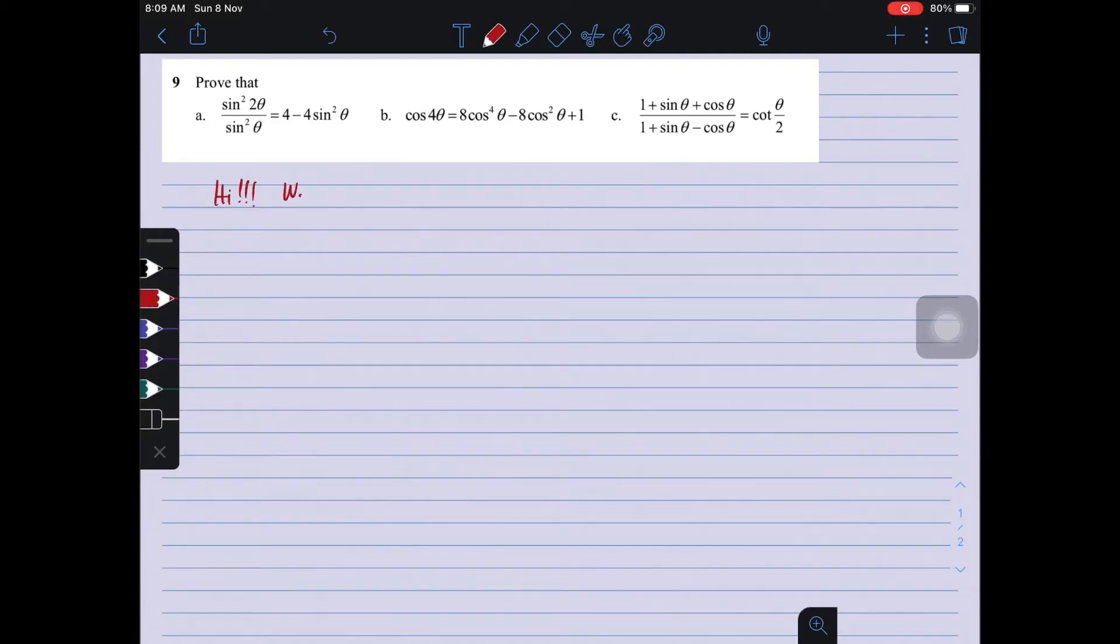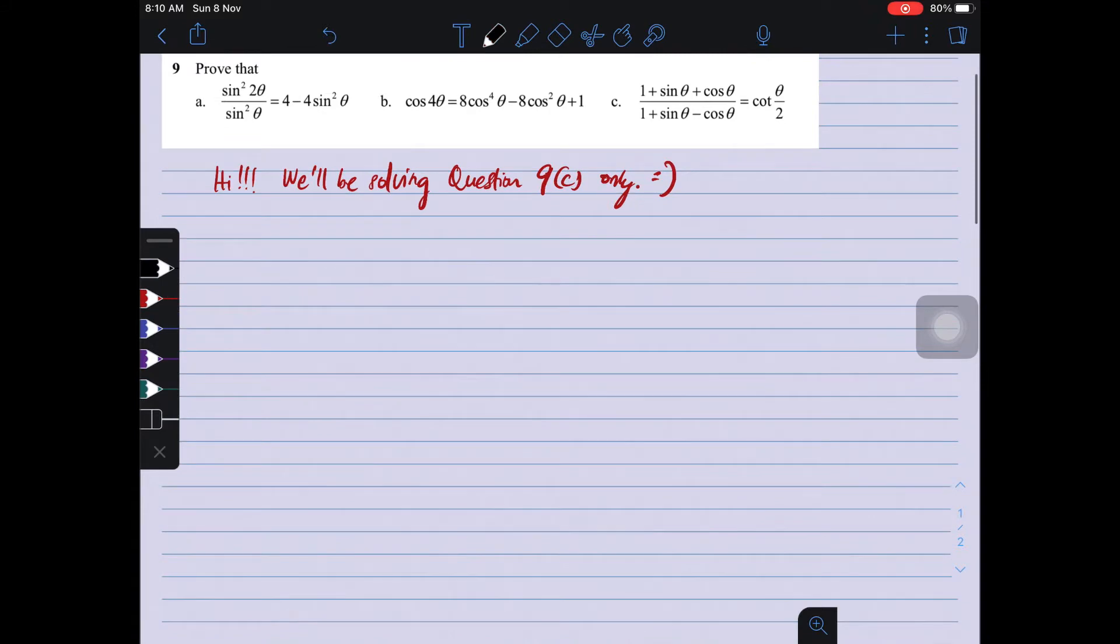Assalamualaikum warahmatullahi wabarakatuh and hello everyone. Right now we will be solving question 9c only as you requested. So 9c we have 1 plus sin theta plus cos theta over 1 plus sin theta minus cos theta equals to cotangent theta over 2.